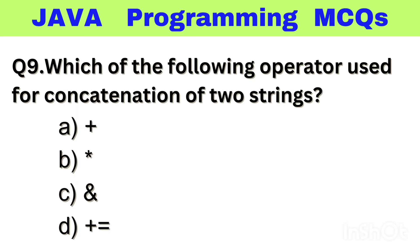Question number 9. Which of the following operators is used for concatenation of two strings? Option A: Plus, B: Asterisk, C: Ampersand, D: Plus or Equal. The right answer is option A, Plus.